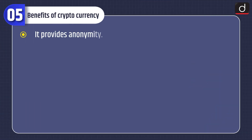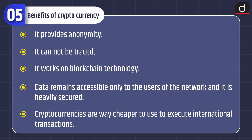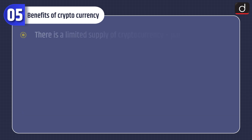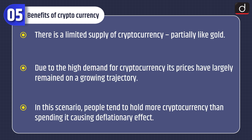Benefits of cryptocurrency: it provides anonymity and cannot be traced. It works on blockchain technology, so data remains accessible only to users of the network and is heavily secured. Cryptocurrencies are far cheaper to use for international transactions. There is a limited supply of cryptocurrency, partially like gold. Due to high demand, prices have largely remained on a growing trajectory; however, people tend to hold more cryptocurrency than spending it, causing a deflationary effect.